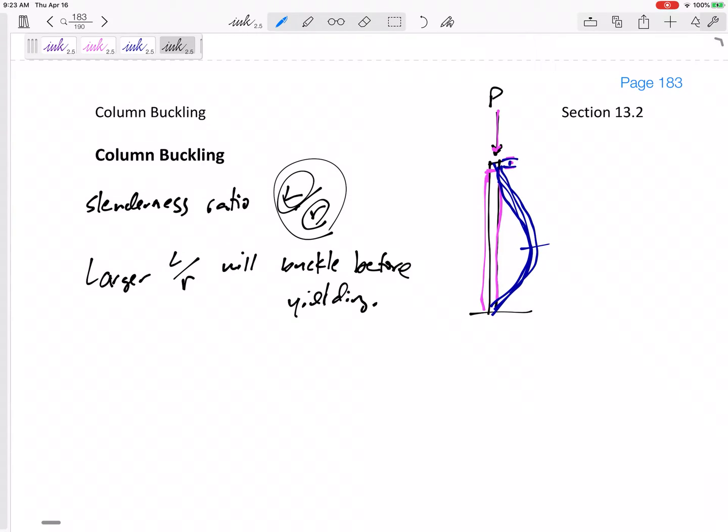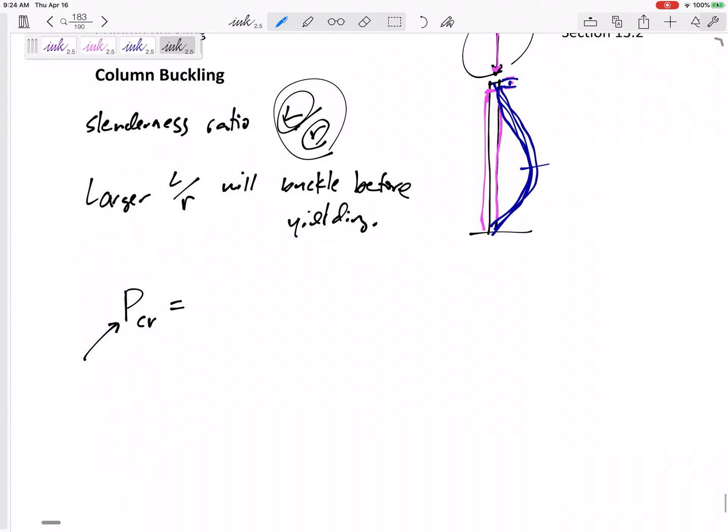And the book has derived, and you can look at this pretty tough, rough derivation, but they've derived the force that will cause columns to buckle. And so that is the force here, P critical. This is the axial force that will cause a column to buckle.